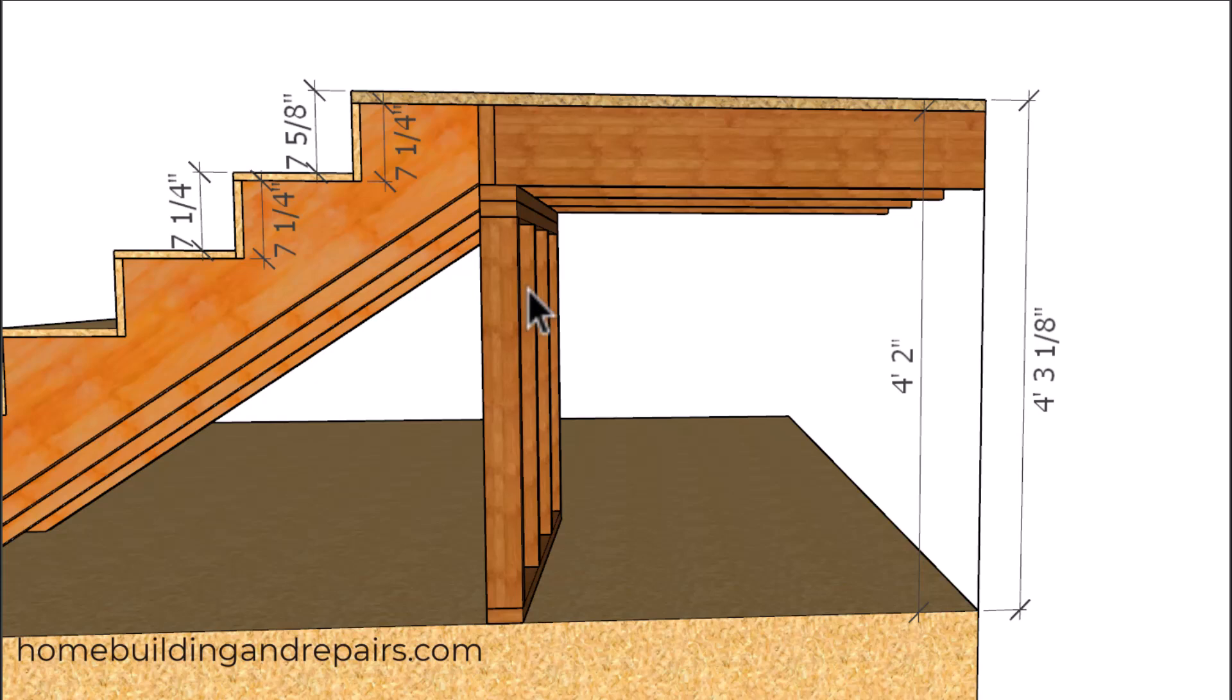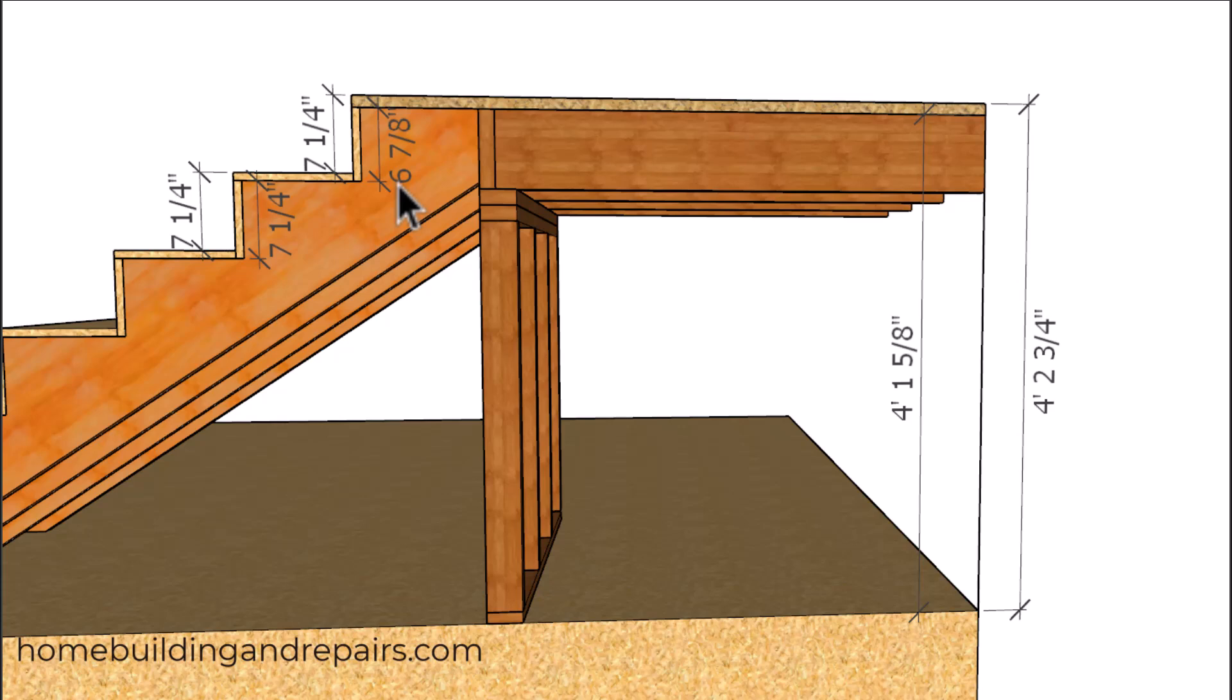So all I need to do to correct this is lay out my stringers in the same way, going all the way up the stringer seven and a quarter inches until I get to the top. And that's when we will subtract the three-eighths of an inch difference from this distance on our stringer layout.